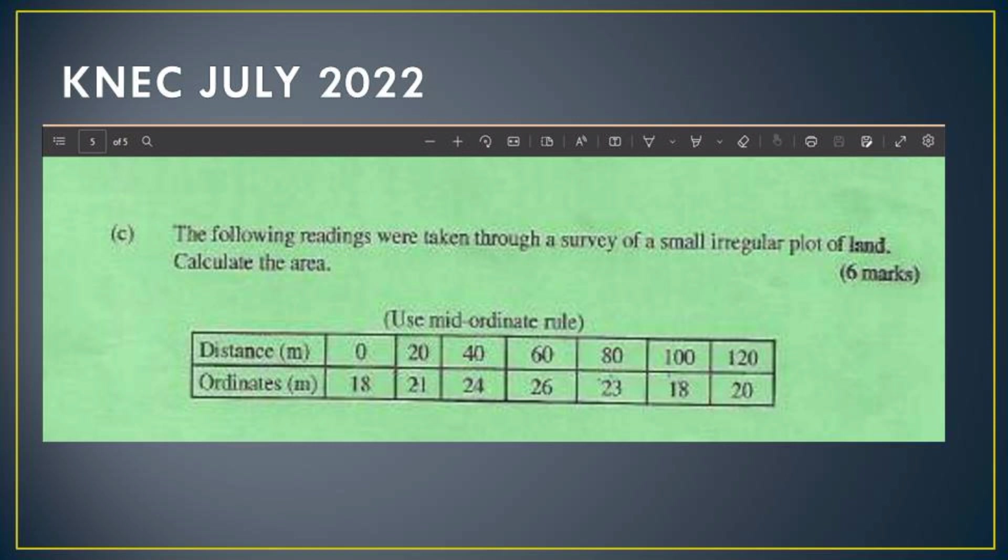The question reads: Question 7c. The following readings were taken through a survey of a small irregular plot of land. Calculate the area. There we have a table, and on top of the table we have been told to use the mid-ordinate rule. Then we are given the distances and the ordinates.